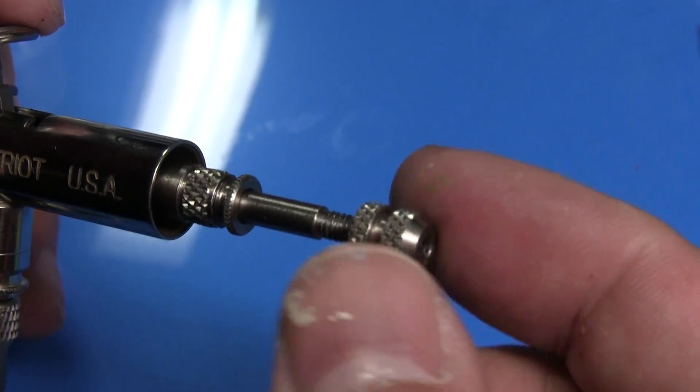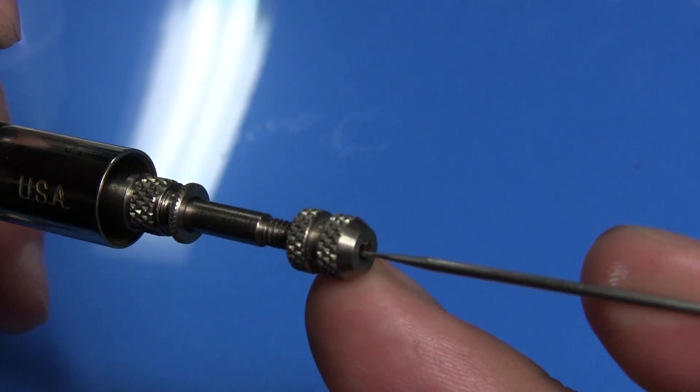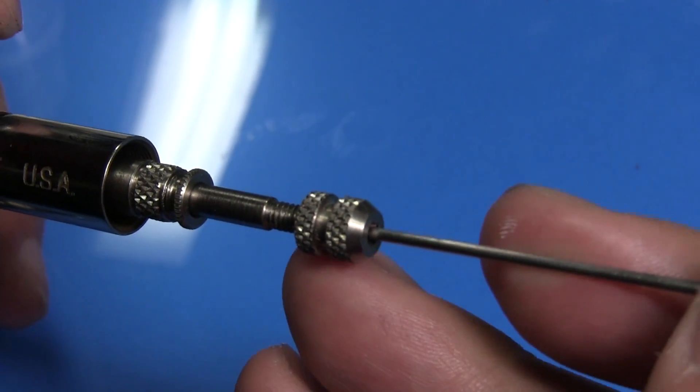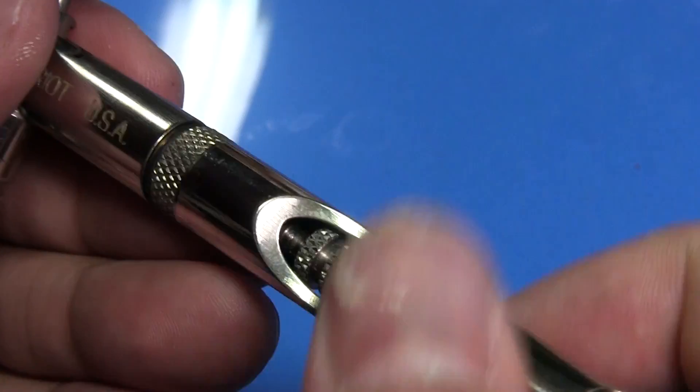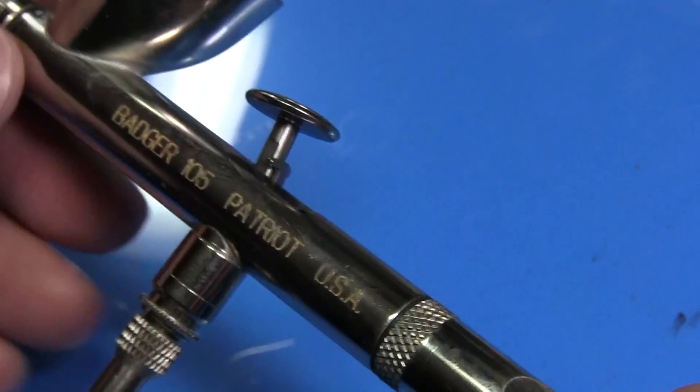Put the needle chuck on, but don't tighten it. Carefully insert the needle. This shouldn't be forced. Then tighten the needle chuck. And screw on the handle. And you're done.